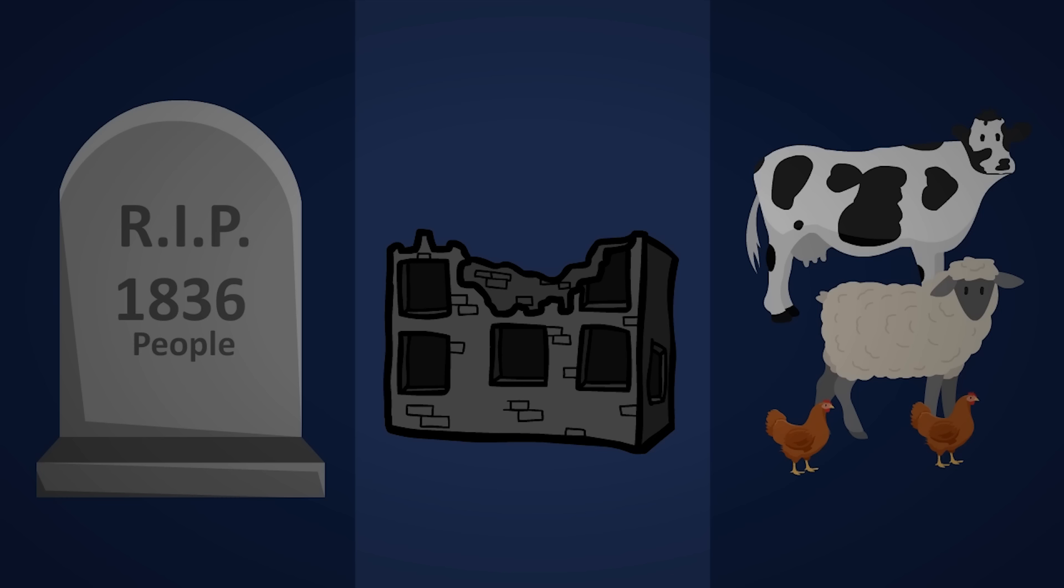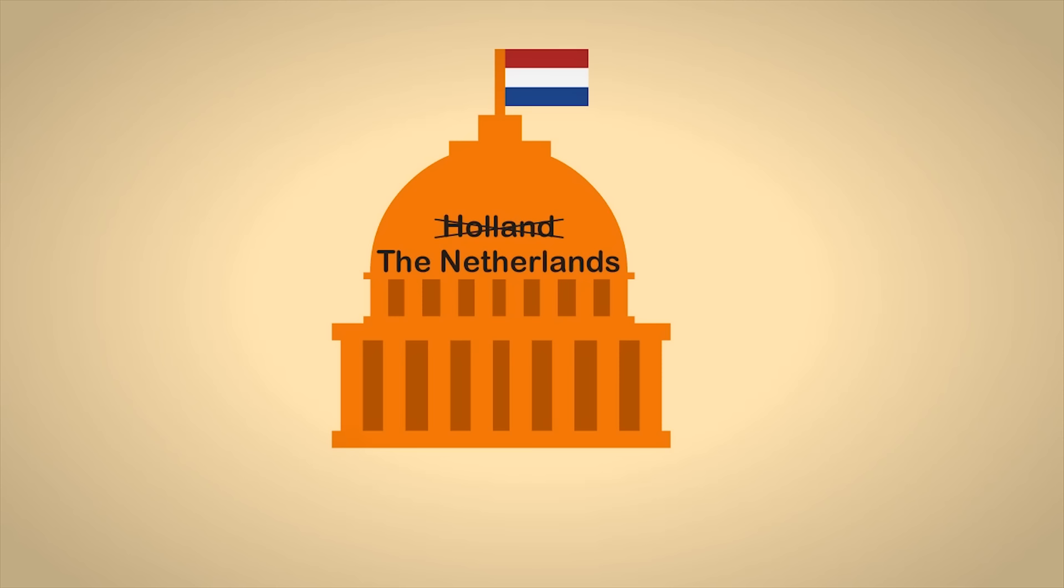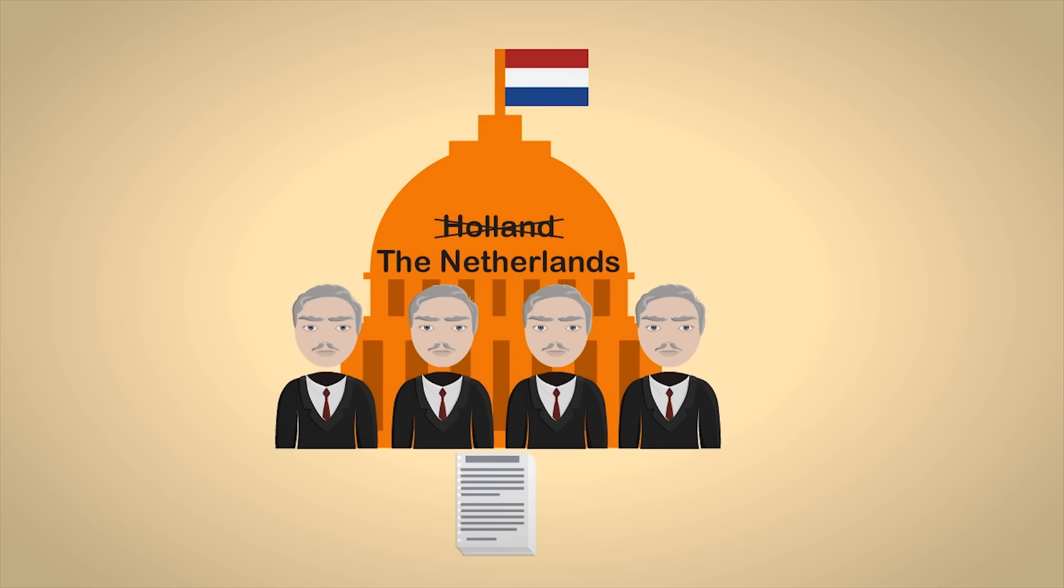The news broadcast the next morning proclaimed, the sea needed just a single night to prove how powerless humanity is. 20 days after the flood, the Dutch government created a team of experts tasked with looking into ways of tackling the problem of the Netherlands constantly flooding. They called this team of experts the Delta Committee.